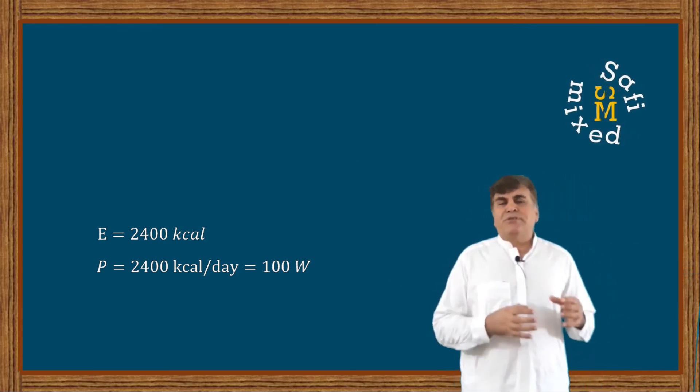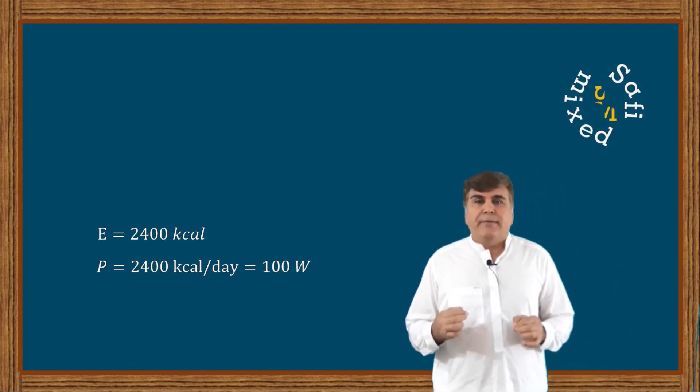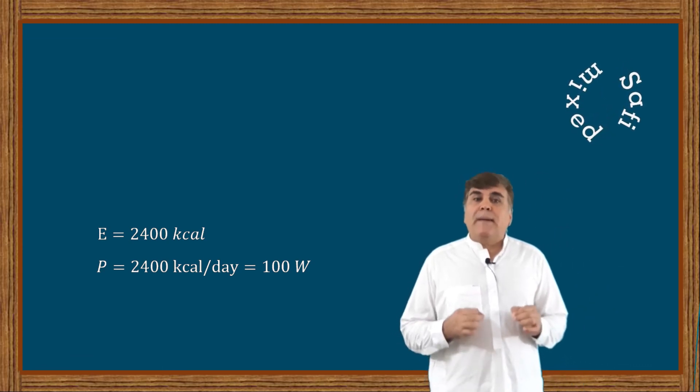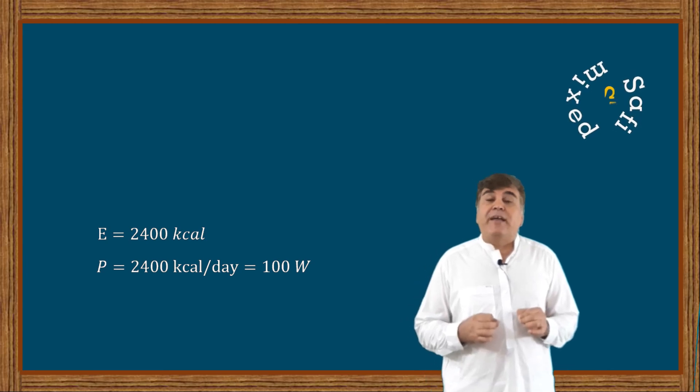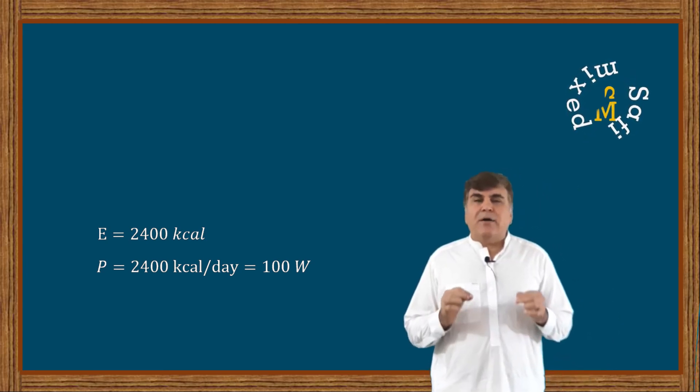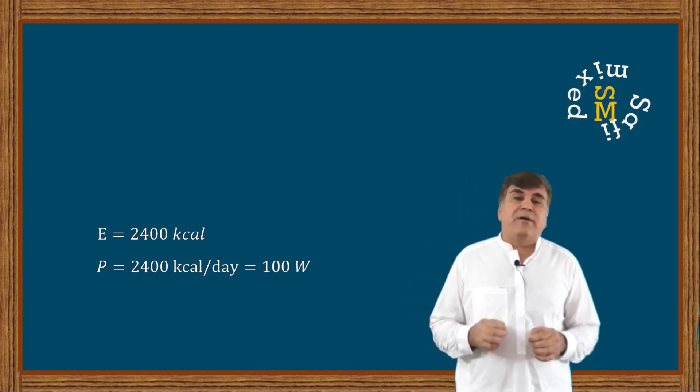25% of this total energy is consumed by the brain. This means the brain of an average human has a power of around 25 watts, which is 10,000 times more powerful than the intrinsic power of the Sun.